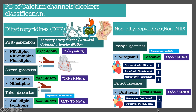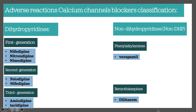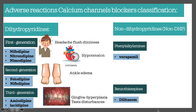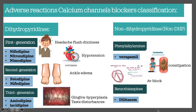Contraindications and adverse reactions of calcium channel blockers include: headache, flushing, and dizziness, mainly with nifedipine and all DHPs; hypotension; ankle edema — one of the biggest ones to remember; gingival hyperplasia; and taste disturbance. Verapamil specifically causes constipation as well as AV block disorders. Diltiazem follows similar adverse reaction profiles. Reflex tachycardia is another notable adverse effect.